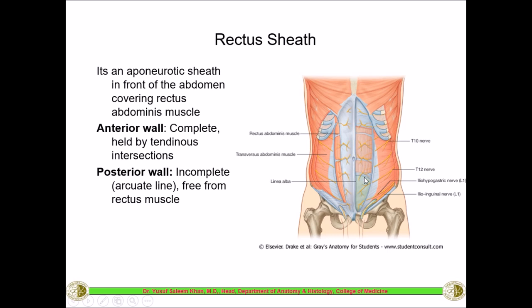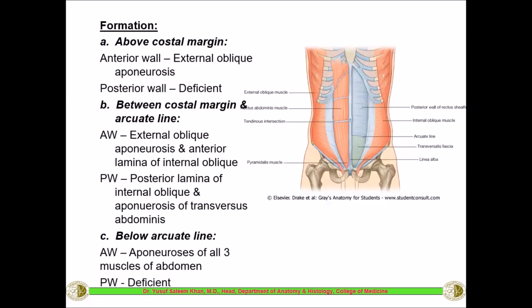Below the arcuate line, there is no posterior rectus sheath, so the transversalis fascia directly contacts the posterior surface of the rectus abdominis. The rectus abdominis can be cut to reveal the posterior wall, which ends as an arch — the arcuate line. We will study the formation of the rectus sheath at three levels: above the costal margin, between the costal margin and the arcuate line, and below the arcuate line.